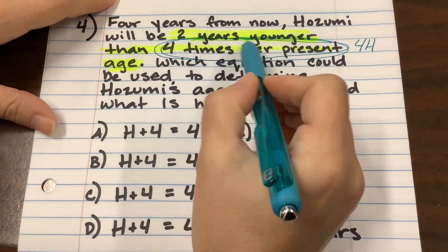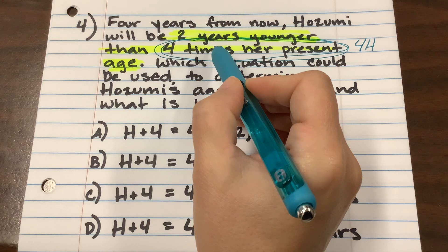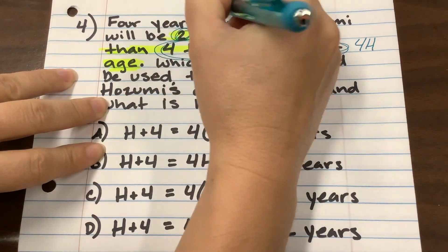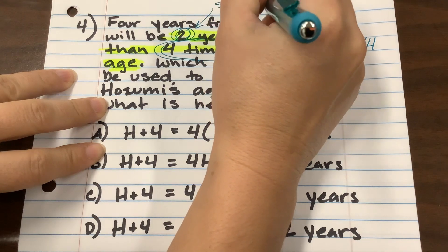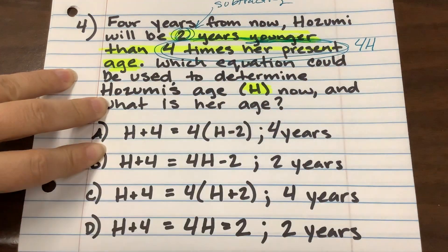And to say that she's two years younger than that, are we adding two years or are we subtracting two years? Yeah, so for this one, this one is subtracting. And that's because it says that she's younger, two years younger than that.